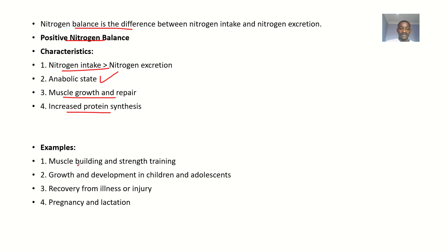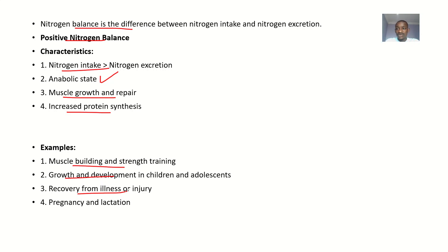Examples of positive nitrogen balance include muscle building and strength training in people who exercise regularly. Children and adolescents, where growth is high, also have positive nitrogen balance. It is also seen during recovery from illness or injury, where the body reduces nitrogen excretion, and during pregnancy and lactation — all situations where nutrient demand is high.